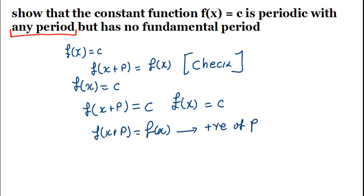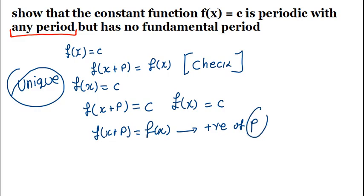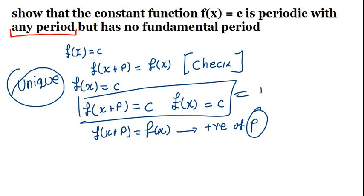Looking at the constant function, since it's periodic with any period, the idea is about being unique — we don't have a unique period in this case. For all positive values of p, there is some period p, but what makes this not have a fundamental period is that for any positive value of p, f of x equals that. Since there is no unique period, there is no fundamental period, and that's all you need. That's basically how we answer such a question.